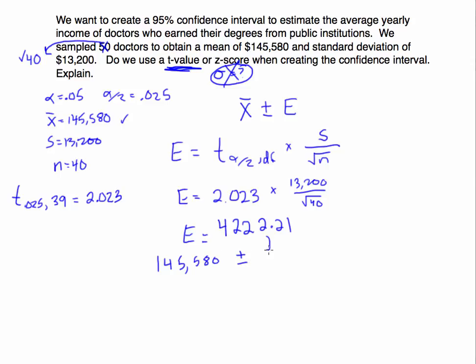We're going to add and subtract this value. When you take 145,580 and subtract 4,222.21, you get $141,357.79. And when you add that value, 145,580 plus 4,222.21, you get $149,802.21.